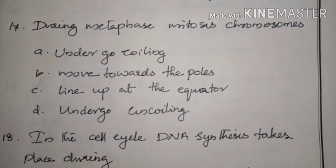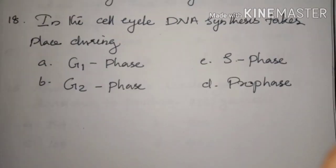During metaphase of mitosis, chromosomes — Answer: Option C, line up at the equator. In the cell cycle, DNA synthesis takes place during — Answer: Option C, S phase.